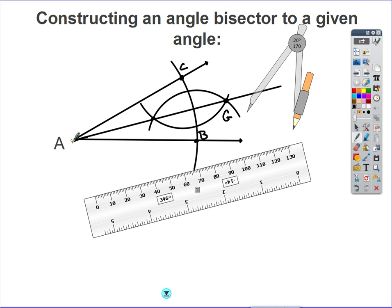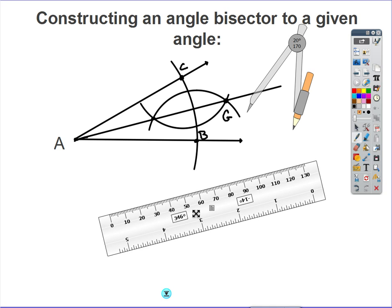Now I'm going to take my straight edge and draw a line going through those points. Once I draw that ray going through point A, from point A through point G, we can now state that the ray AG bisects angle A, or angle CAB. That's our short video on angle bisectors. Rewatch it if you need to see the steps written out again or watch the steps.